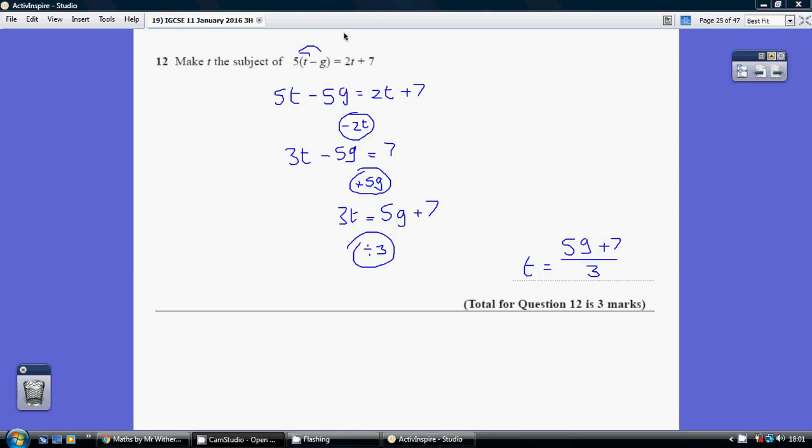So let's start off by multiplying out the brackets. It's always a good place to start. So 5 times t and 5 times minus g, because there's 5t minus 5g equals 2t plus 7.